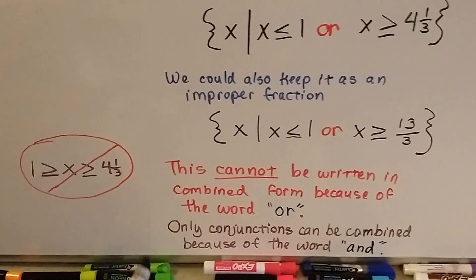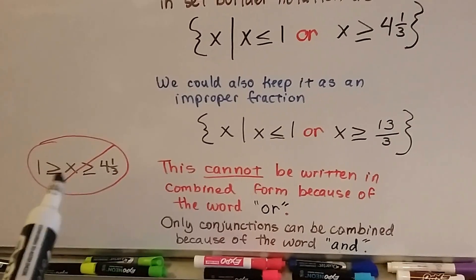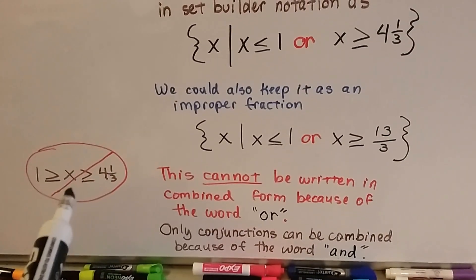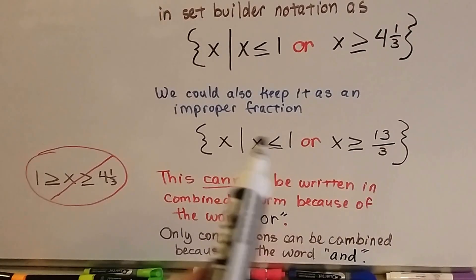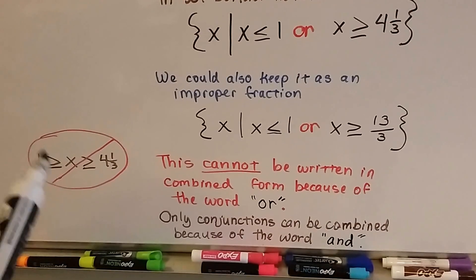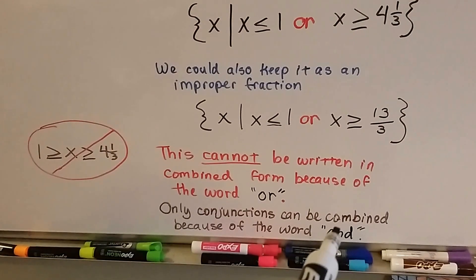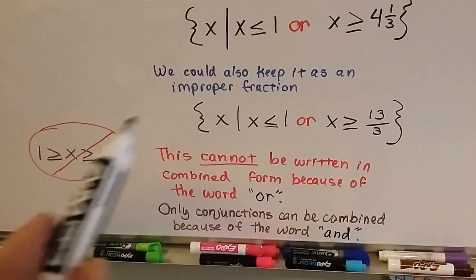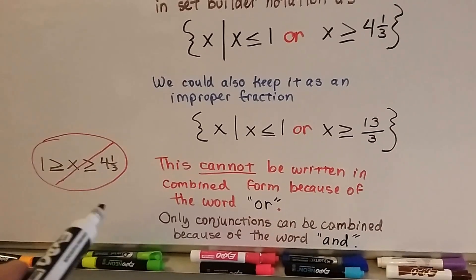Just remember that it cannot be written in a combined form like this because of the word or. We have to keep it open like this with the word or between it. Only conjunctions can be combined because of the word and. So this one is not like this, you can't do that.